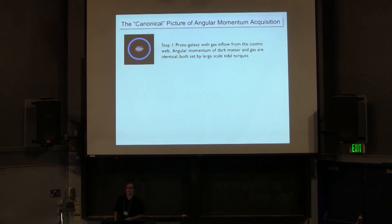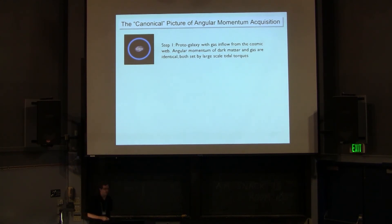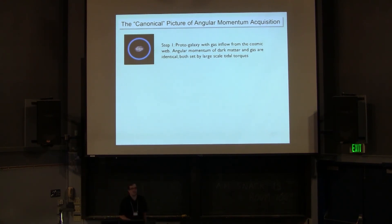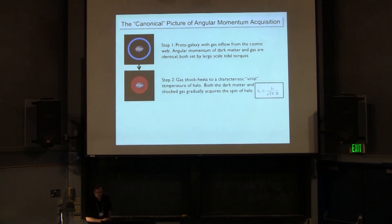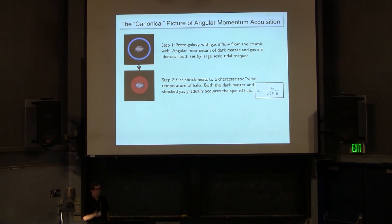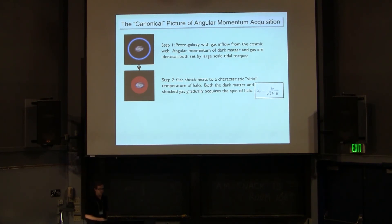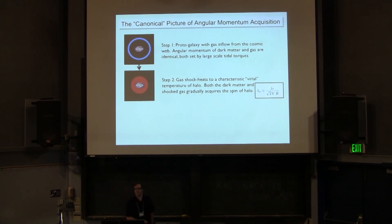To give a little background, the picture of how galaxies form and how they get their angular momentum used to go something like this. You have some proto-galaxy with accretion of dark matter and gas coming in along filaments. The dark matter and gas have the same angular momentum since they're driven by the same large-scale tidal torques. The gas then shock heats to some characteristic temperature of the halo and mixes with the circumgalactic medium already there. You end up with some characteristic spin parameter lambda, which has been well studied especially for dark matter halos in N-body simulations.